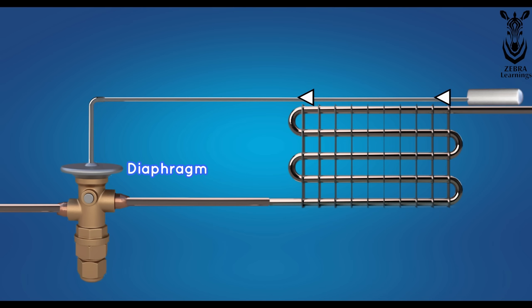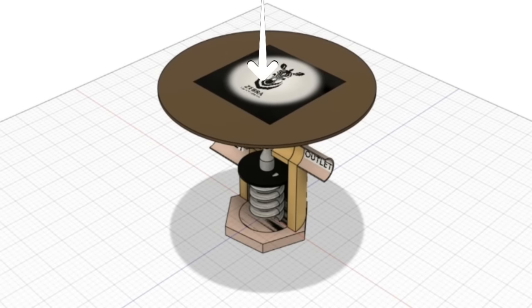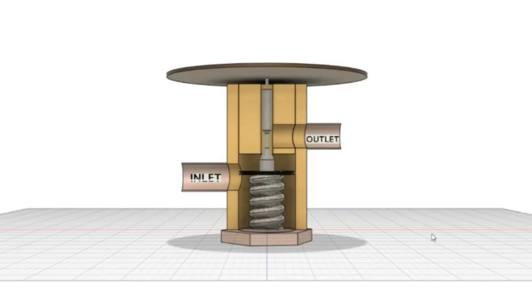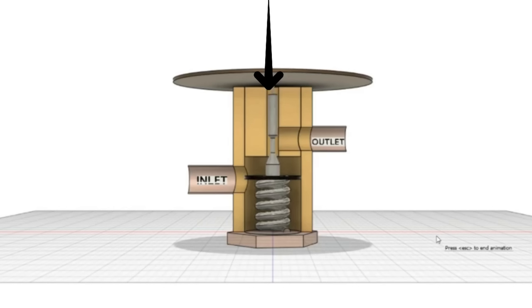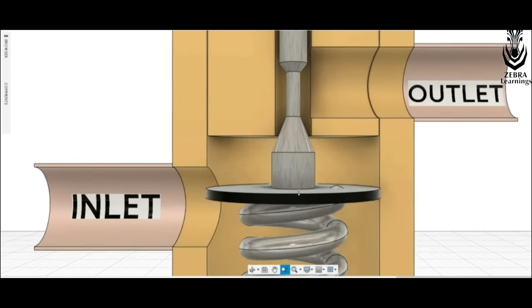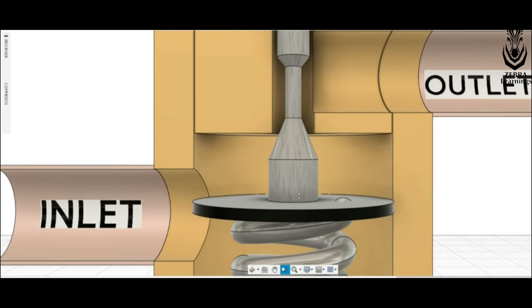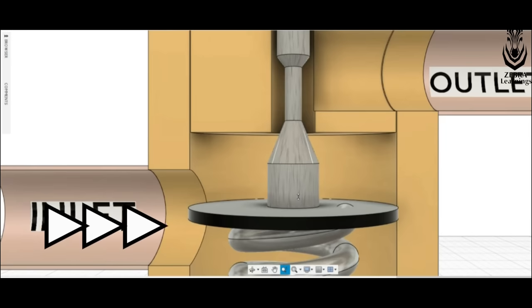All this vapor comes through this small tube to the diaphragm in the expansion valve and pushes the diaphragm down under high pressure. This diaphragm is connected to a spring inside the expansion valve. When the diaphragm is pressed down, this spring is also compressed. Now, the refrigerant path increases, and more refrigerant goes to the evaporator.